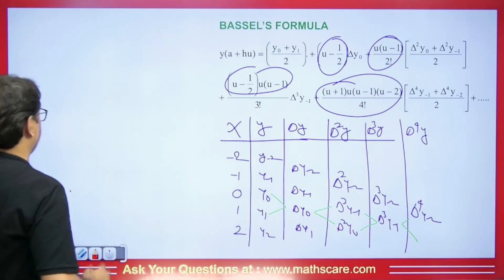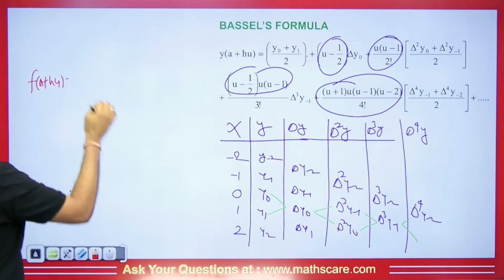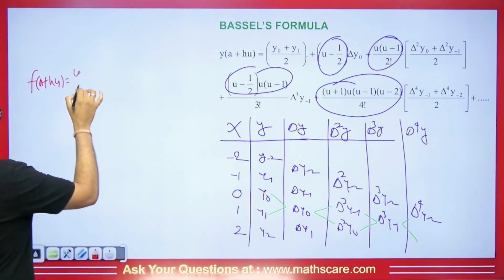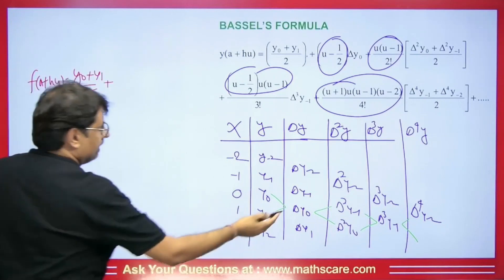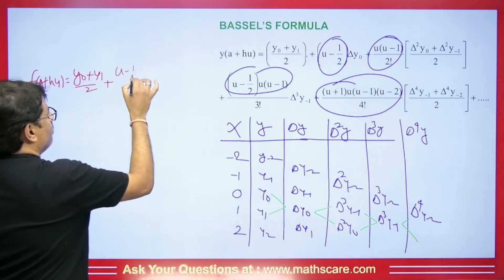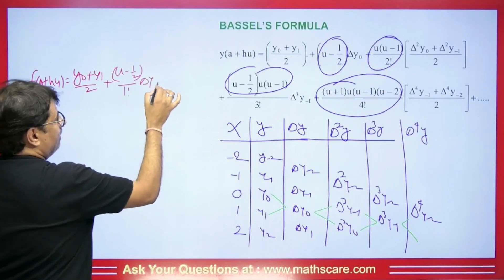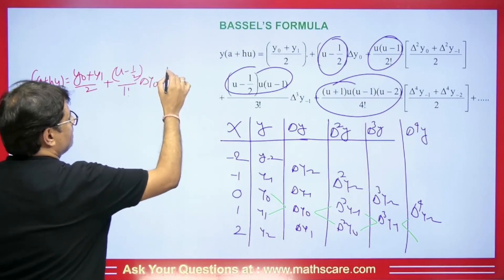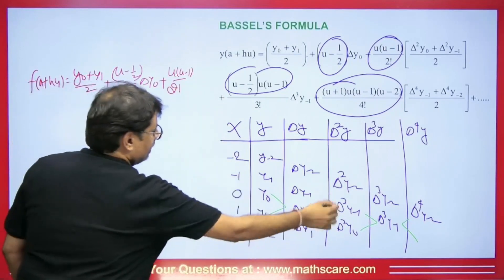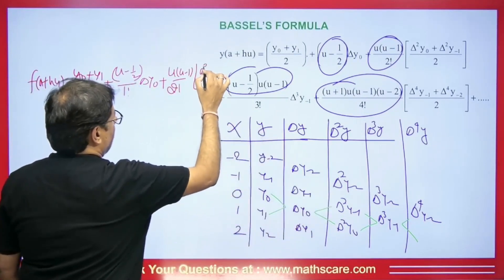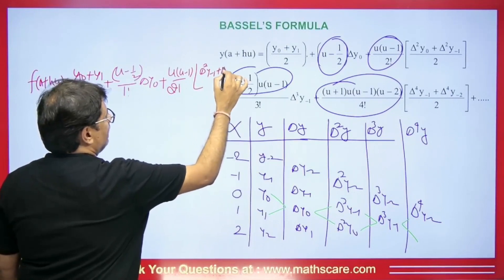So writing out this formula: F(A + Hu). First we take the average of Y0 and Y1 divided by 2. Then we add the term (U minus 1/2) upon 1 factorial multiplied by del Y0. Then we get U(U minus 1) upon 2 factorial, and then the average of del squared Y minus 1 plus del squared Y0 upon 2.